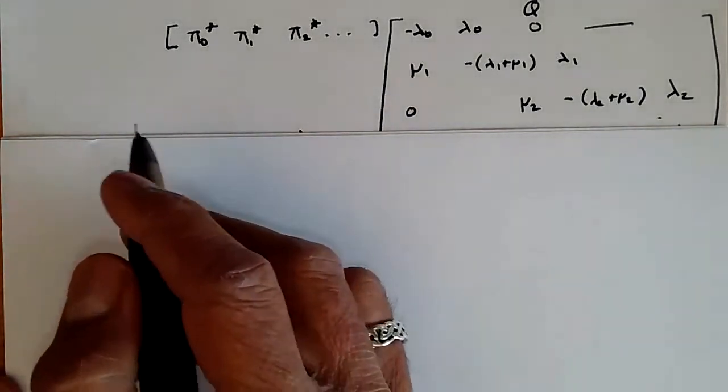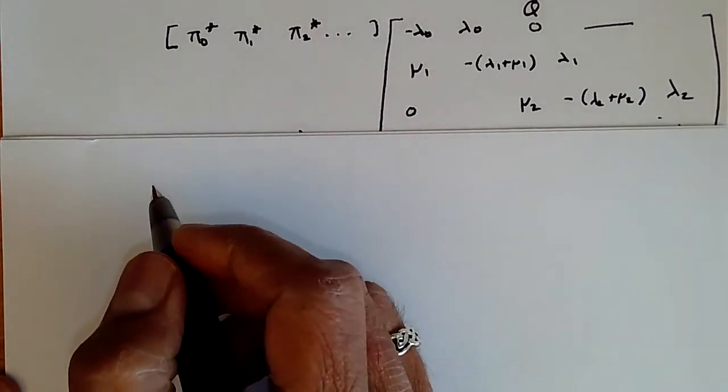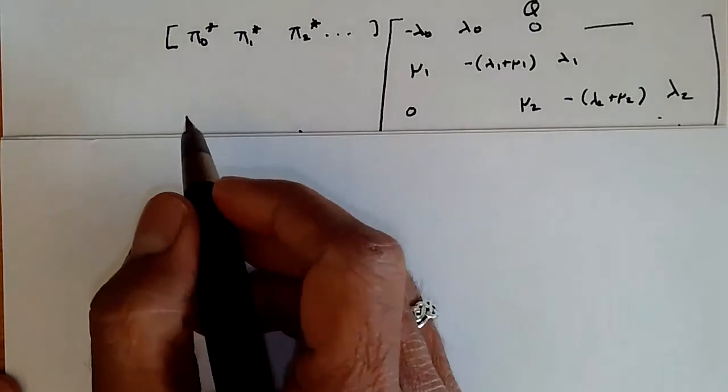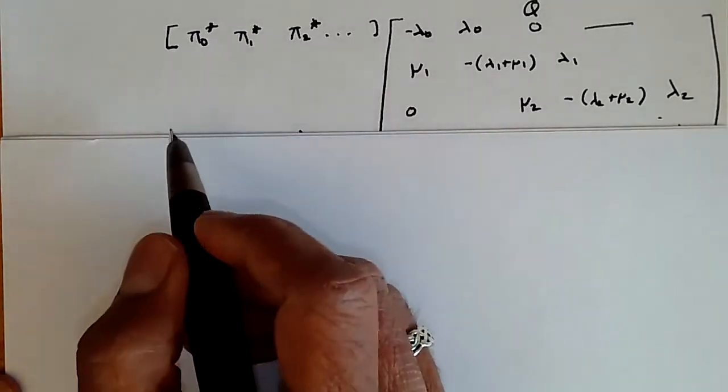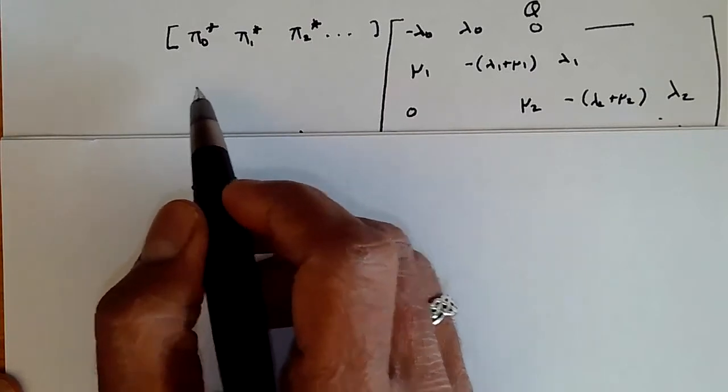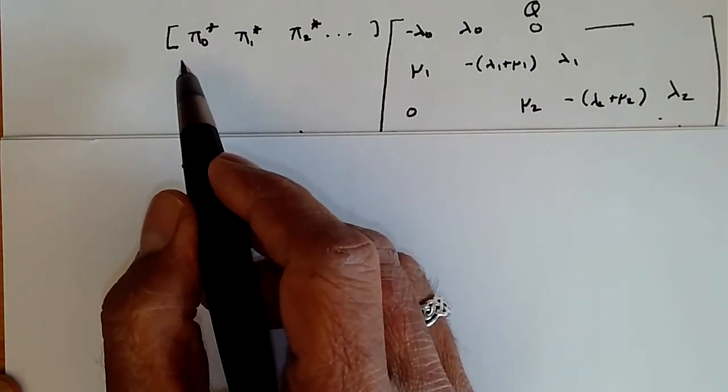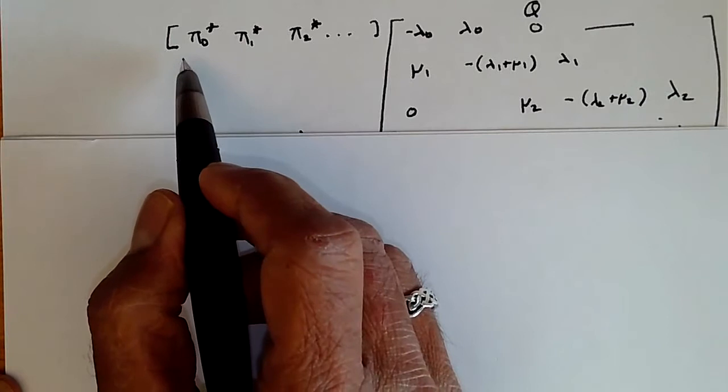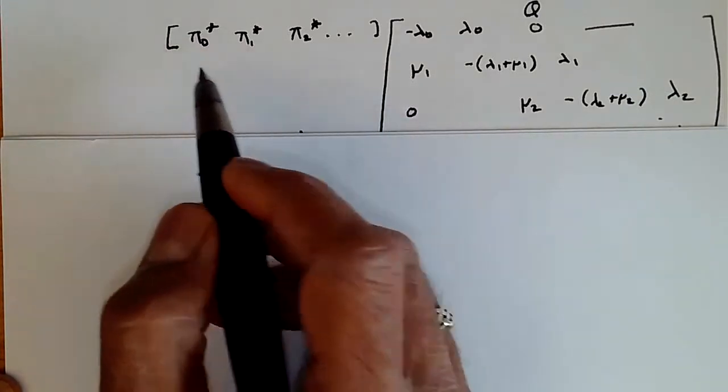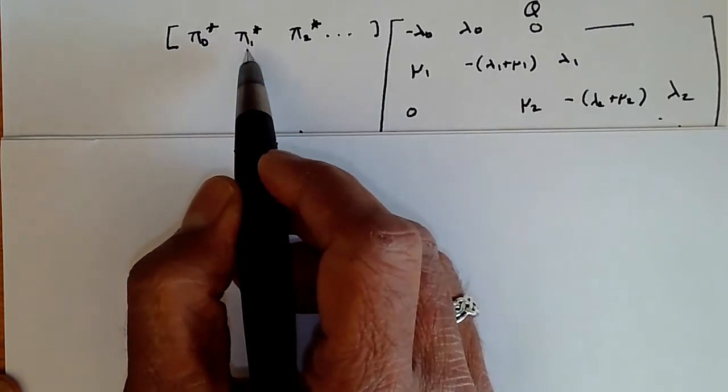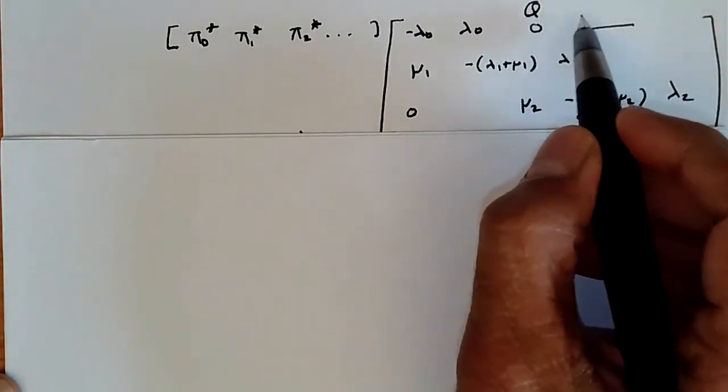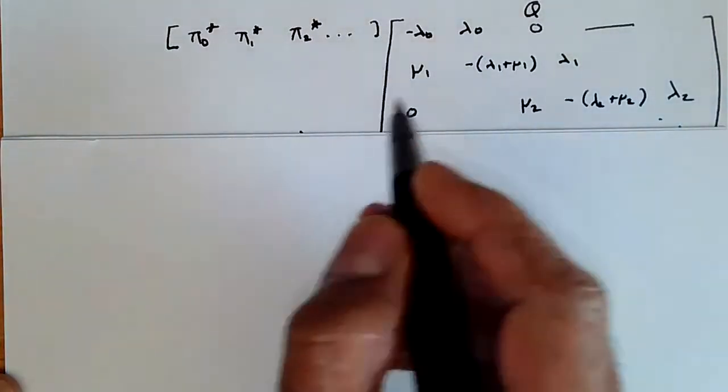Okay, let's find out the general solution for the probability of being in any state in steady state for a birth-death process. Remember that the probability of being in any state in the stationary probability distribution is given by this equation in compact form. We have the vector π₀*, π₁*, π₂*, et cetera, multiplied by the Q matrix, and we're going to set the product equal to zero.